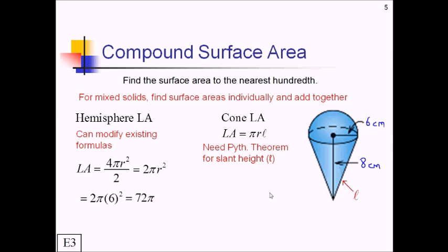All right, so hopefully you came up with the square root of 6 squared plus 8 squared, which is the square root of 36 plus 64, which is the square root of 100, which is 10. Or you could have just gotten this by 3, 4, 5 triangle either way. So let's plug it in now. We've got π times the radius of 6 times the slant height of 10, which comes out to 60π.